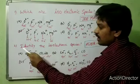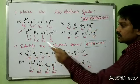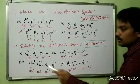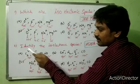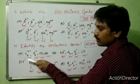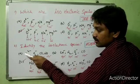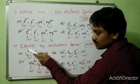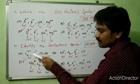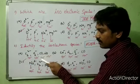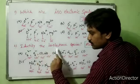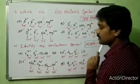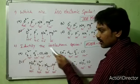Second question: identify the isoelectronic species. This question is from AIPMT 2008. Option A: C₂²⁻ — carbon has 6 protons, so 6 × 2 = 12, plus 2 gained electrons equals 14 electrons. O₂⁻ has 17 electrons. CO has 14 electrons. NO has 15 electrons. There is no similarity among these species, so option A is not isoelectronic.